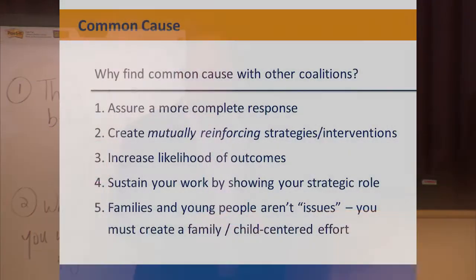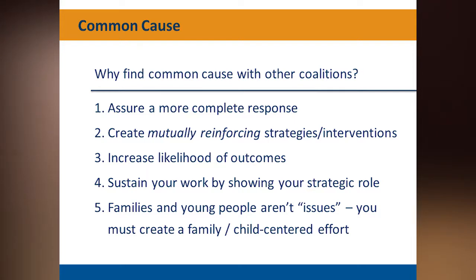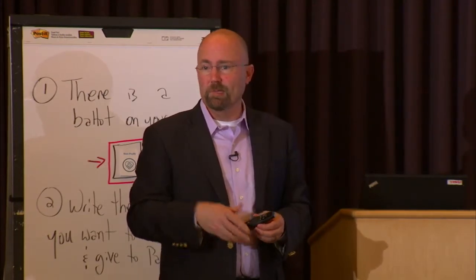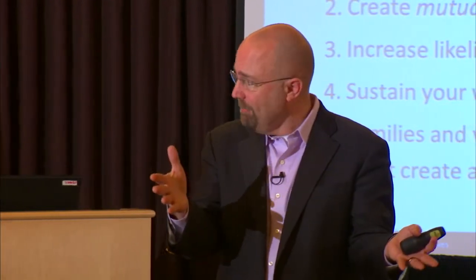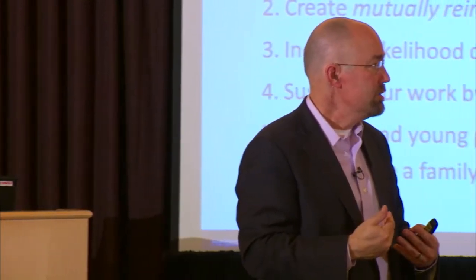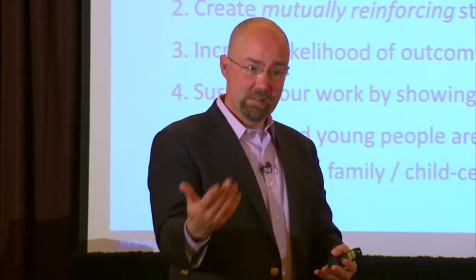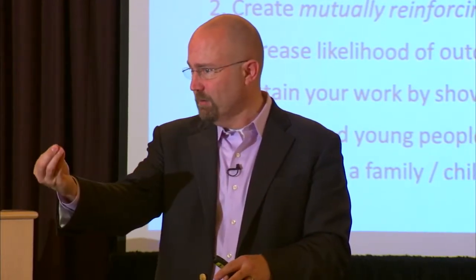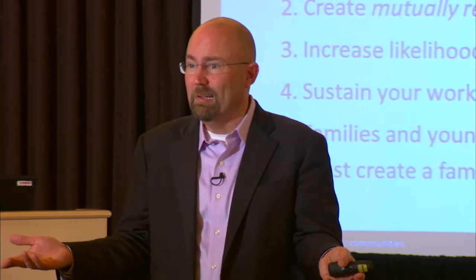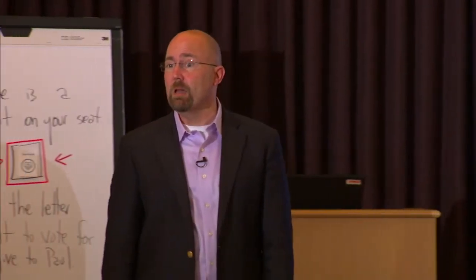Last but not least: families and kids aren't issues — they're families and kids. Treating them issue by issue — today it's your liver, tomorrow it's your brain and school success — that's not people's lives. While we have a legitimate interest in certain aspects of community life, when that's all we have as a community, when we haven't thought child-centered and family-centered, we begin to treat people like issues. We get systems where people fill out 25 forms for 75 different things. It's time to do business differently.